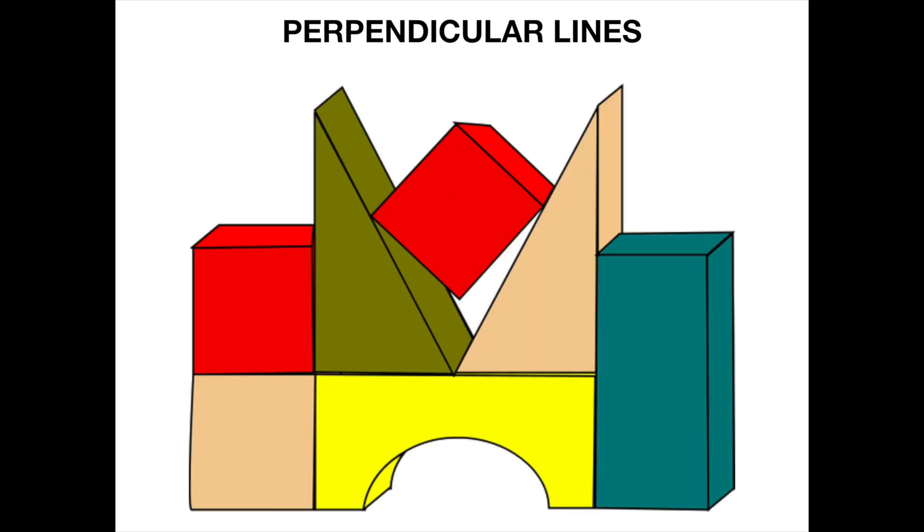Here are some building blocks. Let's look for some perpendicular lines. Two lines that move away from each other while maintaining a right angle. I found two perpendicular lines here. Let's put the corner of the square in place to check and make sure it's at a right angle. Can you find other perpendicular lines? You can pause the video to take a moment to think.